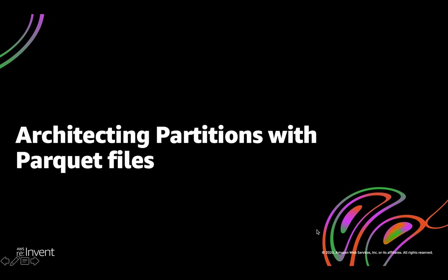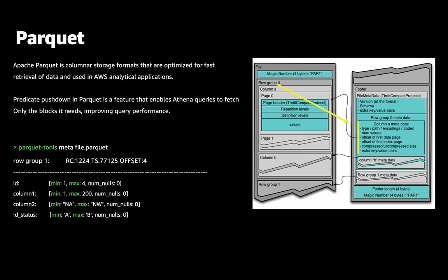The next topic is architecting partitions with parquet files. Before discussing how to architect your partitions, we need to understand how a parquet file works. Apache Parquet is a columnar file format. The columns are grouped together by row group — for example, row group 0 and row group 1, with column A and column B inside. Each row group is compressed, and in the footer we have the metadata about the row groups, including all metadata related to this file and the row groups.